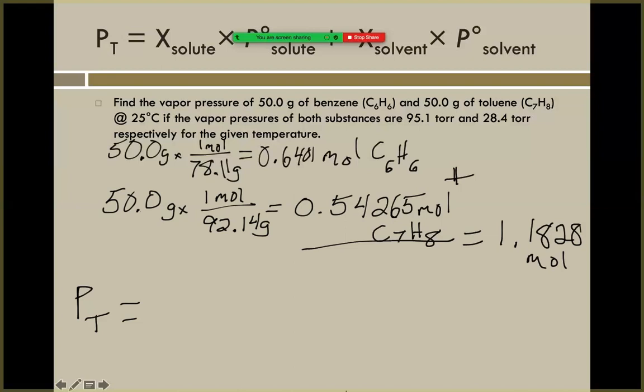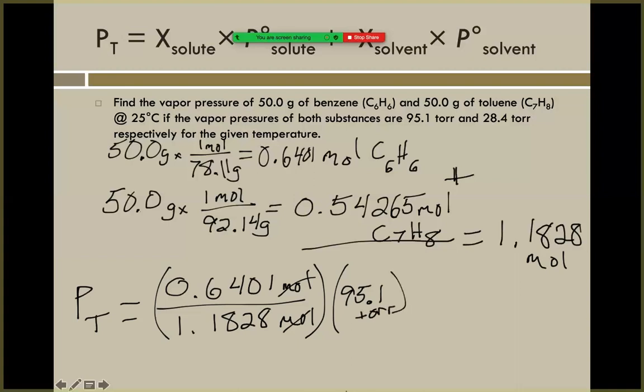If we do the benzene first, we had 0.6401 moles of our benzene over our total moles, which we found to be 1.1828. Our moles are going to cancel, giving us a unitless fraction. We're going to take that times the original pressure from our benzene. Up in the question, it told us that the pressures were 95 and 28 respectively, meaning in the same order. That means the benzene was that 95.1 torr. The moles cancel, we're left with torr, which is great.